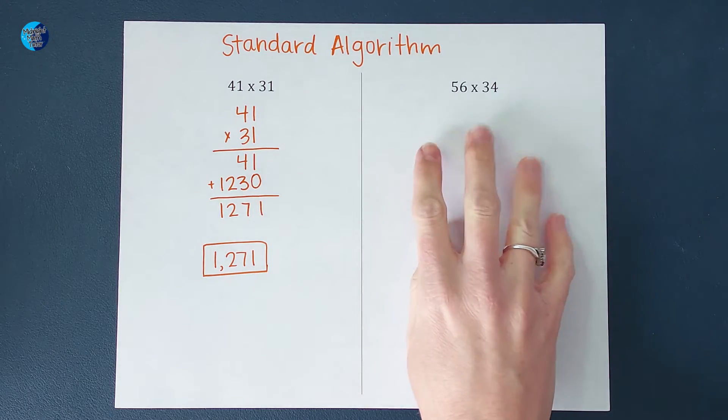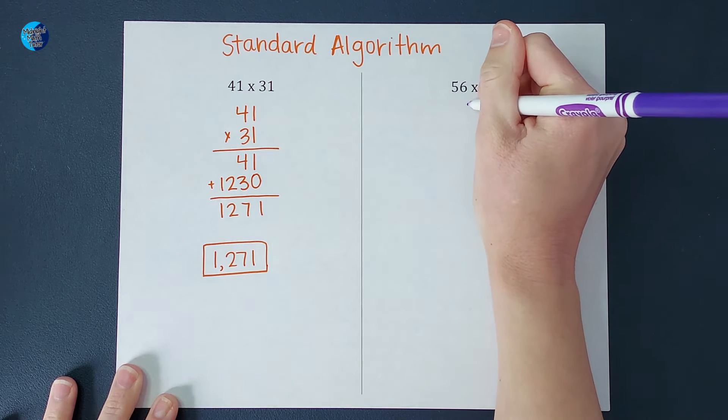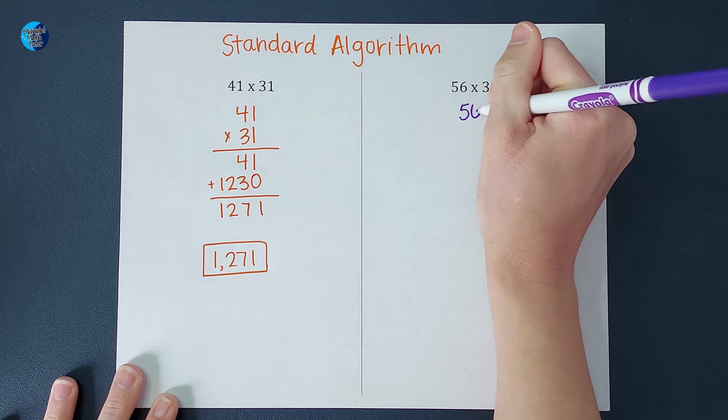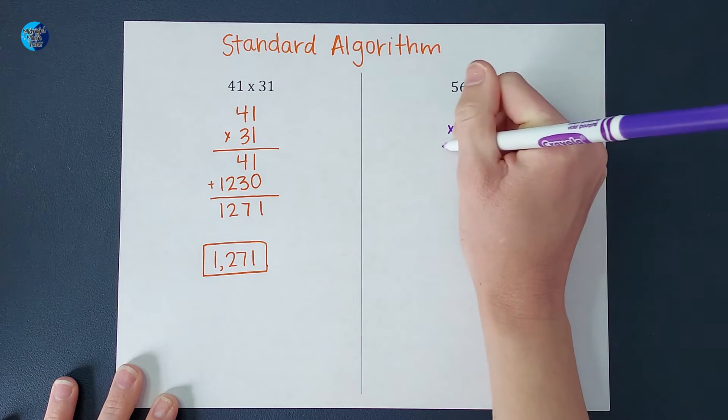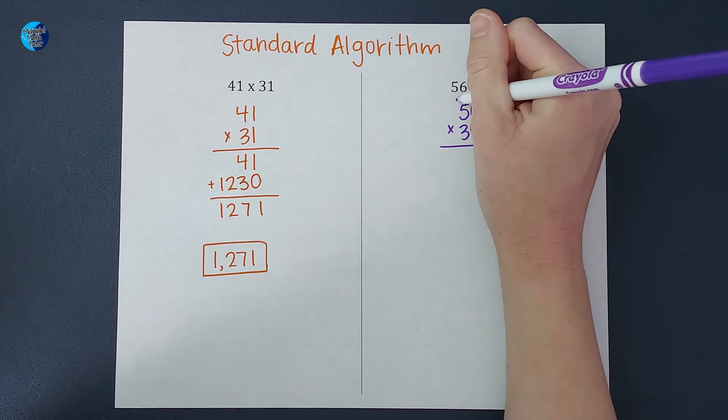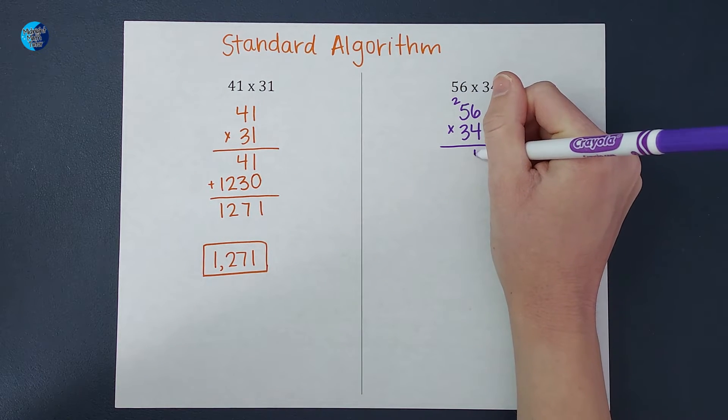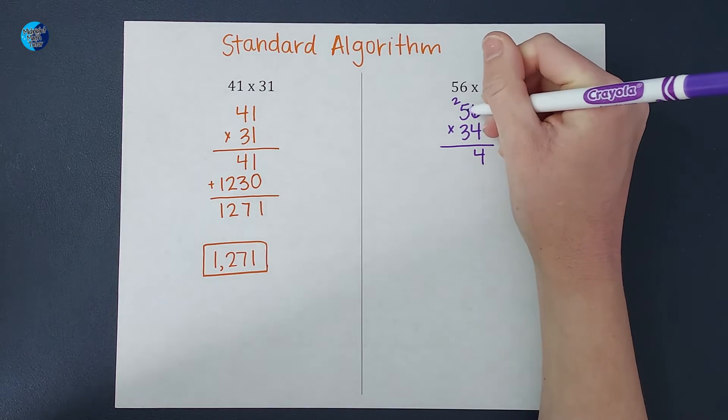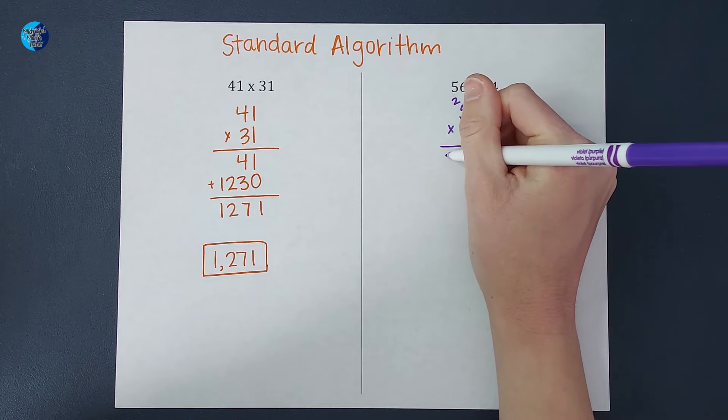This one we're going to carry. There's a reason I'm showing you two examples. Okay, so we're going to have 56 times 34. So I do 4 times 6, which gives me 24. And I'm going to carry the 2 over there. 4 times 5 gives me 20. And then I add that 2. So I end up with 22.